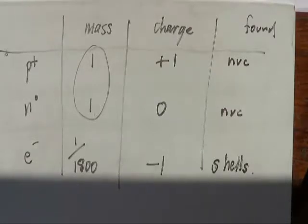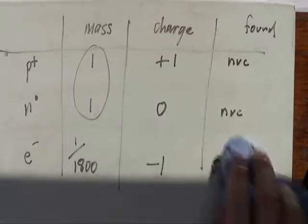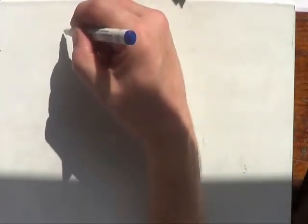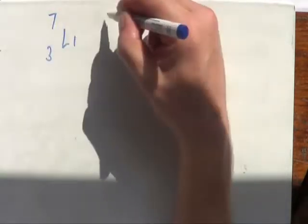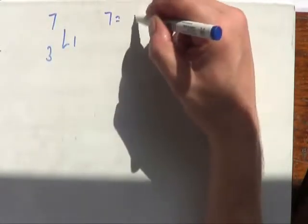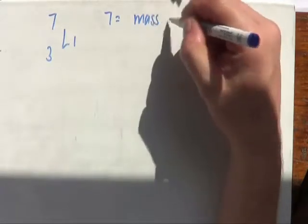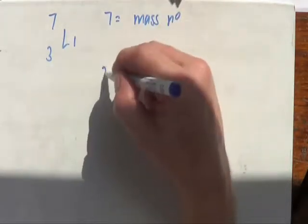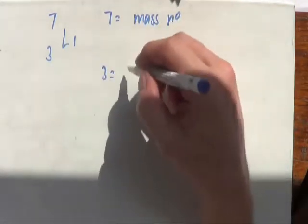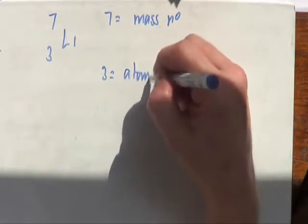We need to be able to work out how many protons, neutrons, and electrons are in something. We always have two numbers attached to any particular atom. We'll take lithium at 7 and 3. The seven — the top number — is what we call our mass number, and the three — the bottom number, the smaller number — is called our atomic number.